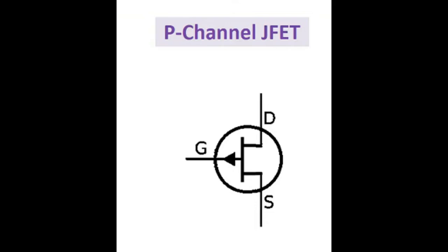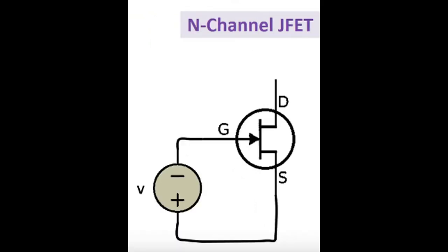So, what's the difference between them? To trigger N channel JFET, the negative pin of the connected source must be connected to gate of the JFET and the positive pin to the source.